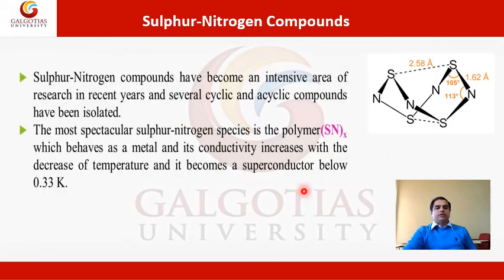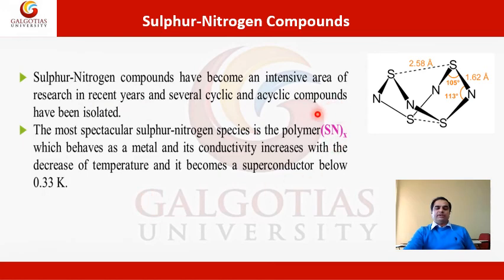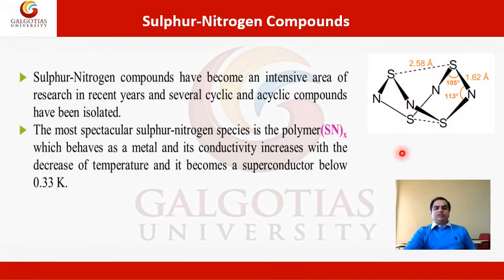Now, what are sulfur nitro compounds? As we can see, this is the structure of sulfur nitro compounds. Sulfur nitro compounds have been an intensive area of research in recent years, having several cyclic and acyclic compounds which have been isolated. The most spectacular sulfur nitro compound is (SN)x, which behaves as a metal, and its conductivity increases when we decrease the temperature, and it also becomes a superconductor below a temperature of 0.33 Kelvin. This is the structural formula of (SN)x, in which we have an S-S bond equal to 2.58 Angstroms, an S-N bond equal to 1.62 Angstroms, an N-S-N angle of 105 degrees, and an S-N-S angle of 113 degrees.